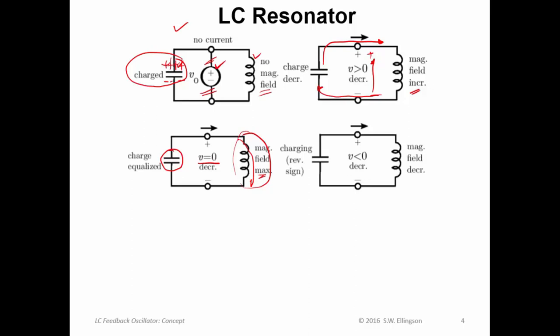But things don't stop there. What happens now is we start redistributing charge in the opposite direction. So now we will start seeing positive charge appear down here. Minus charges appear up here. The current is still flowing propelled by the energy in the inductor. But the magnetic field is decreasing because the current flow is decreasing.